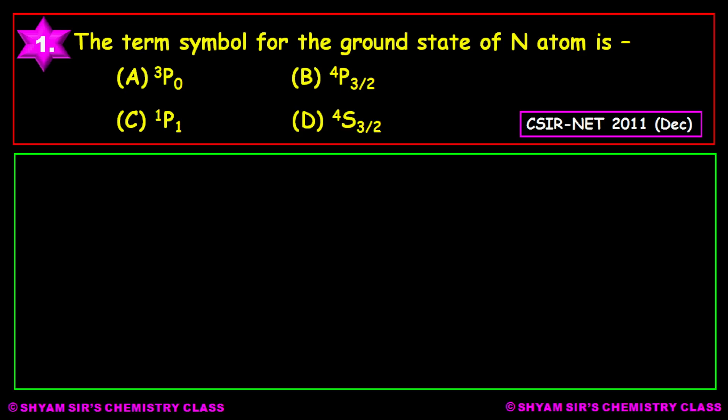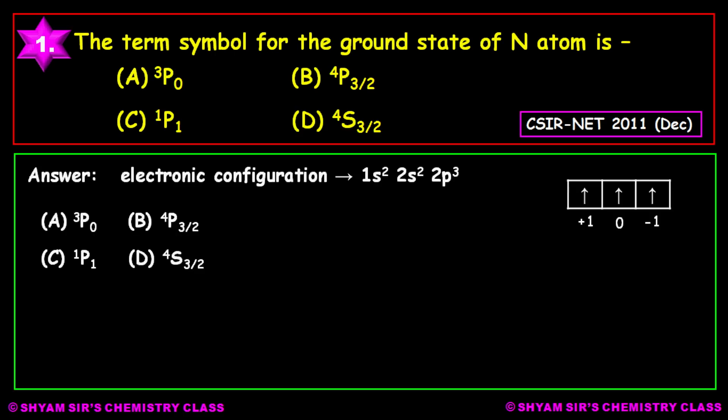First, you have to write down the electronic configuration. The electronic configuration of the nitrogen atom is 1s2, 2s2, 2p3. You will calculate only for the outermost orbital. Here, the outermost orbital is 2p3. The 2p3 configuration has one electron in each subshell according to Hund's rule. The m_l values of the p orbital are +1, 0, and −1. From this, S equals plus one-half plus one-half plus one-half, giving S equal to three-halves for three electrons in three different subshells.